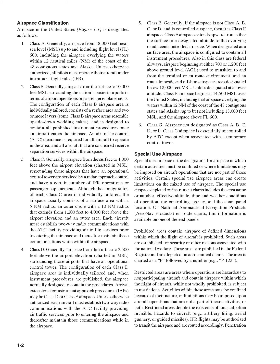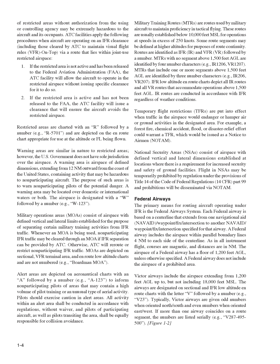Penetration of restricted areas without authorization from the using or controlling agency may be extremely hazardous to the aircraft and its occupants. ATC facilities apply the following procedures when aircraft are operating on an IFR clearance, including those cleared to maintain VFR on top, via a route that lies within joint use restricted airspace. If the restricted area is not active and has been released to the FAA, the ATC facility will allow the aircraft to operate in the restricted airspace without issuing specific clearance. If the restricted area is active and has not been released to the FAA, the ATC facility will issue a clearance that will ensure the aircraft avoids the restricted airspace. Restricted areas are charted with an R followed by a number, for example R5701, and are depicted on the on-route chart appropriate for use at the altitude or FL being flown.